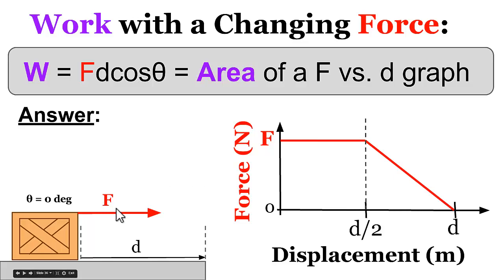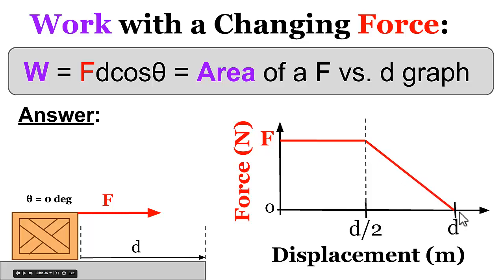Now let's look at another situation where the force on our box is parallel to the displacement, but the force is not constant. It follows a graph where for the first half of the displacement the force is some constant value F, and over the last half it decreases down to zero. If the force were constant we'd use the standard equation, but since it's not, we have to find the area under the force-versus-displacement graph — just as we did with springs for spring potential energy — to calculate the work done.